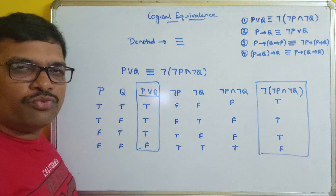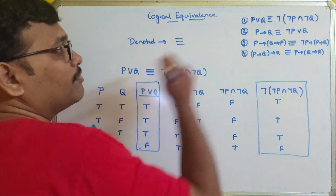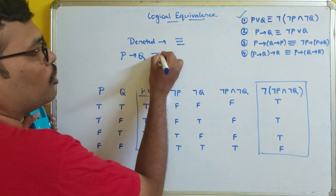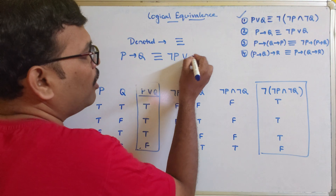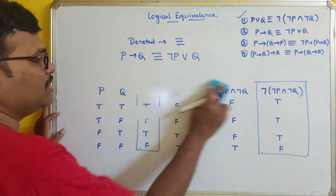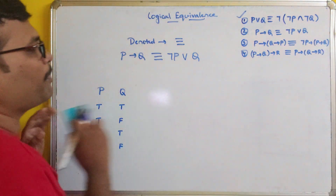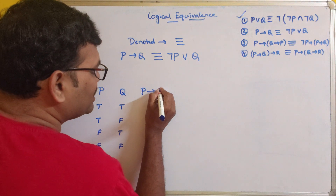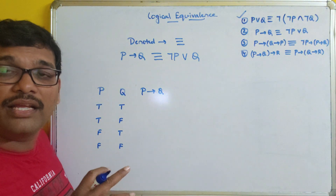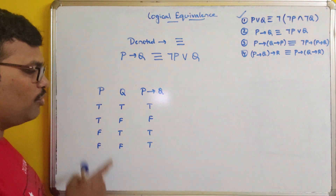Moving on to the second example: P implies Q is logically equivalent to negation P or Q. Again we have only two propositions, so combinations will be 2 power 2. We find P implies Q: if P is true and Q is false, then only the result will be false; in all remaining cases it will be true. So: true/true is true, true/false is false, false/true is true, false/false is true.